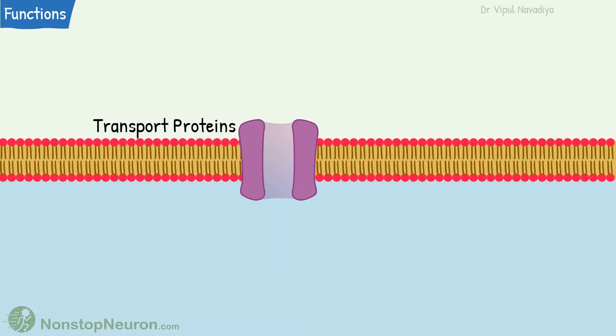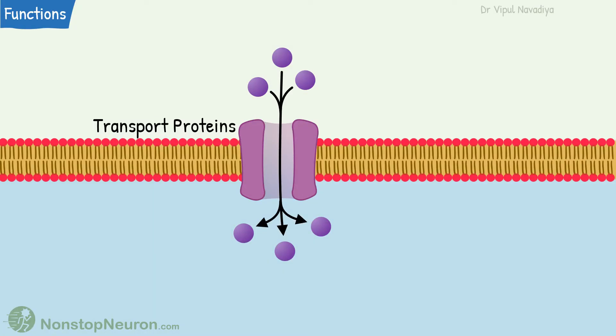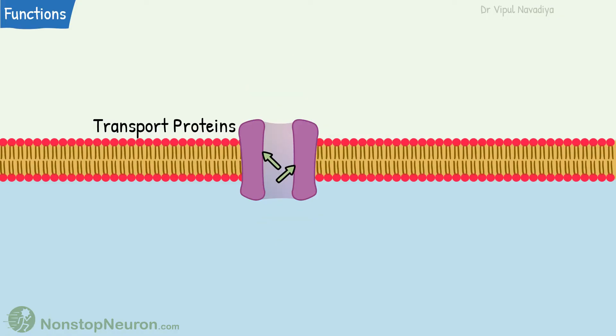Third, to carry out transmembrane movement — these are various transport proteins. They contribute to the movement of water and water-soluble substances across the membrane. For example, sodium channels in the neuron allow the passage of sodium when stimulated. In such channels, amino acids towards the center of the channel are polar, so they can stay in contact with water, while the amino acids on the outer side are non-polar, so they can stay with the non-polar lipids of the membrane.